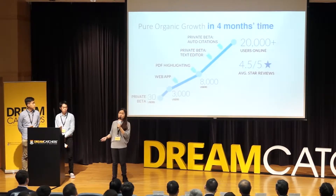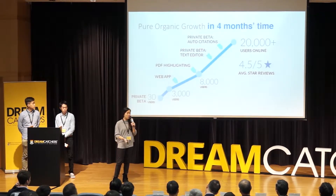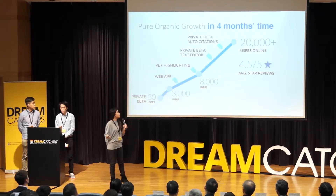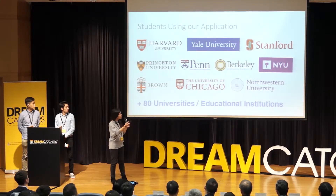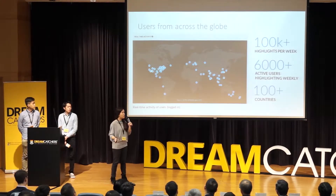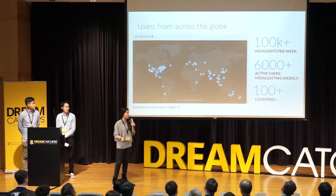Our users grew from 30 to over 20,000 users with pure organic growth, because we have no money right now to do any marketing. There are over 100,000 highlights per week, with over 6,000 active users highlighting every week.